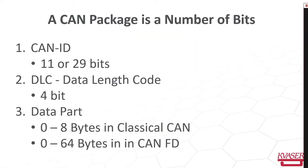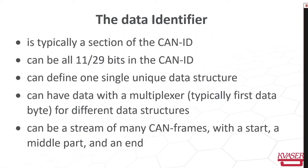When you get the CAN frame from the CAN lib with the interface API, you get the CAN ID, the data length code, and the data part, which must be interpreted by finding a match in the database. The data is identified typically as part of the CAN ID. It can be all 11 or 29 bits in the CAN ID that define the data content and the data structure. One CAN ID can identify one unique data structure, but it can also be that data is multiplexed — typically the first byte identifies different data structures for the rest of the bytes.